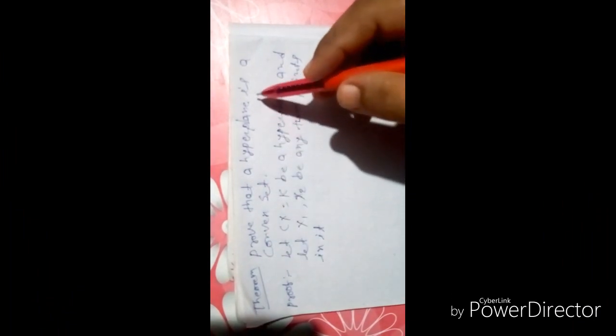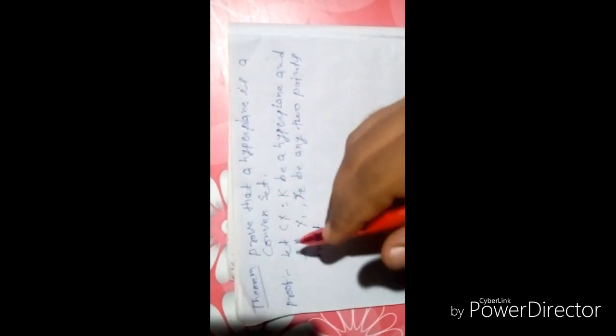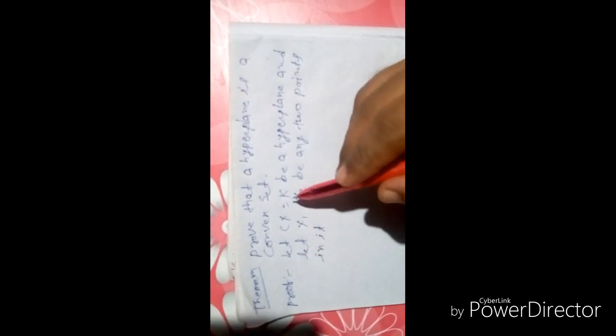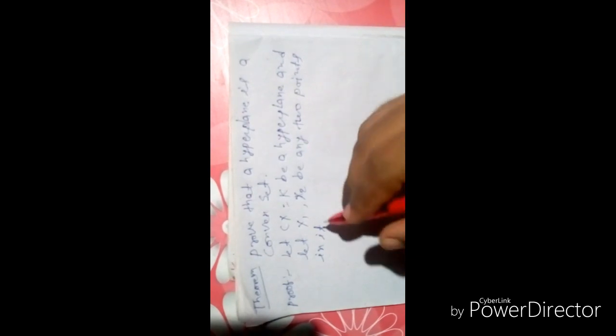Prove that a hyperplane is a convex set. Let Cx = K be a hyperplane and let x1 and x2 be any two points in it.